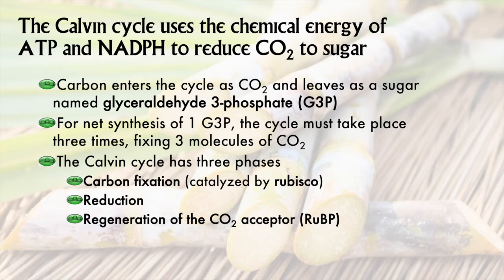In order to make G3P, a plant needs to run the Calvin cycle three times, fixing three carbon dioxide molecules. The Calvin cycle has three phases. Step one: carbon fixation, where carbon dioxide is added to an organic molecule, a reaction catalyzed by the enzyme Rubisco. Step two is reduction, or adding electron power to that carbon atom, and this is where the sugar molecule steps out. Step three is the regeneration of the molecule that receives the next molecule of carbon dioxide, which is called ribulose bisphosphate.